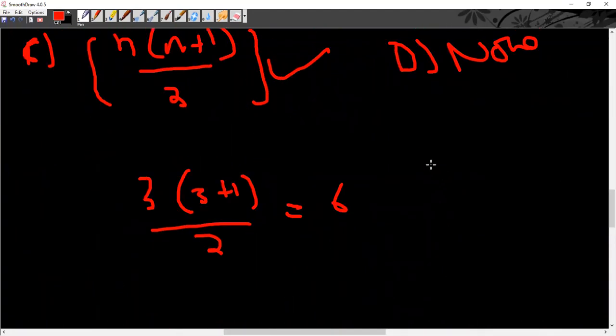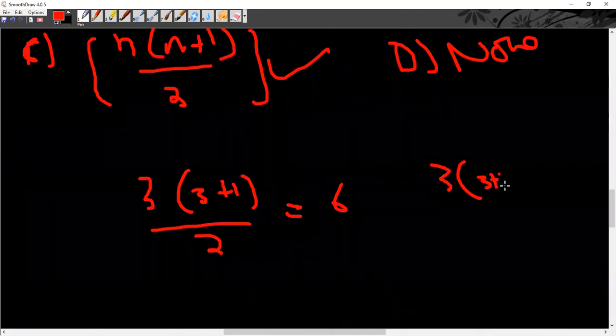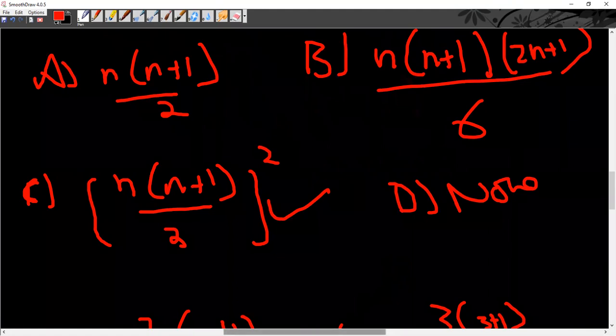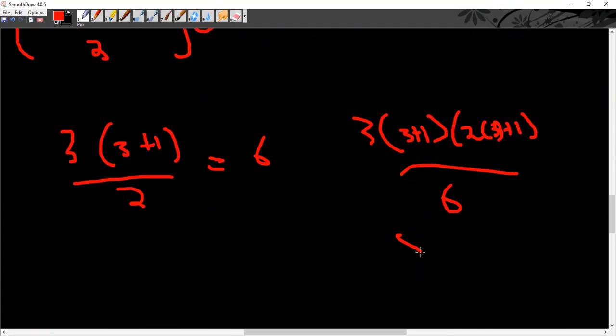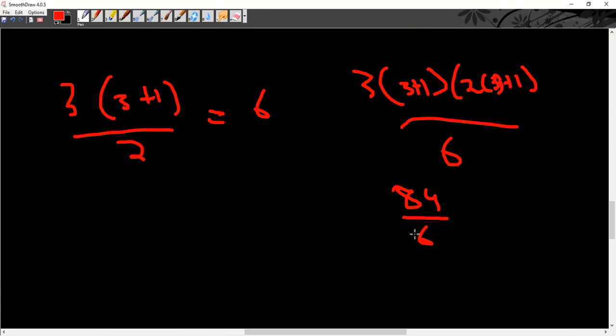3 into 3 plus 1 into 2 into 3 plus 1 divided by 6. This is 4 times 3 is 12, times 7 is 84 divided by 6. 6 times 14, it is not giving you 36.